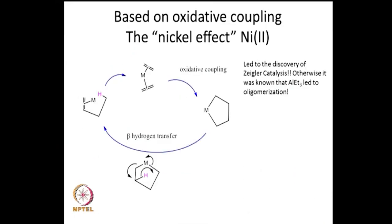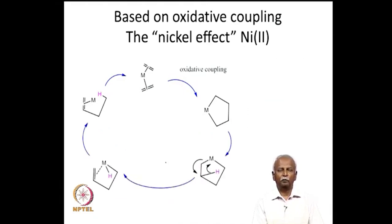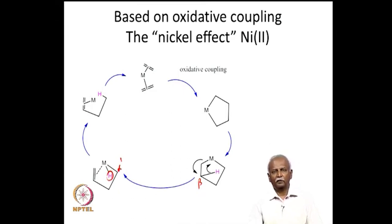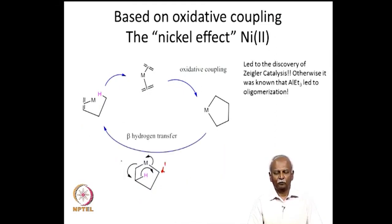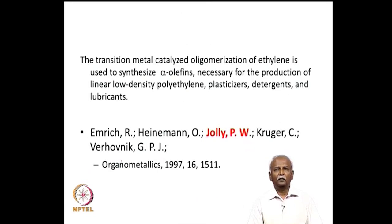Two processes can occur: one is direct transfer of hydrogen from the beta position to the alpha-prime carbon, and the other is transfer of hydrogen from the beta position to the metal, then a second reductive elimination to the alpha-prime carbon. In either mechanism it is the beta hydrogen which is transferred. Butene is useful, but hexene is more valuable — so you need to trimerize an olefin. The synthesis of alpha-olefins, where the double bond is at the alpha carbon, is very important for bulk industrial materials.